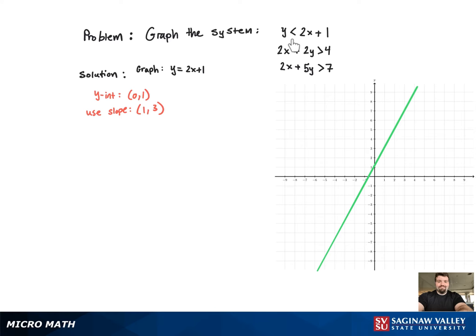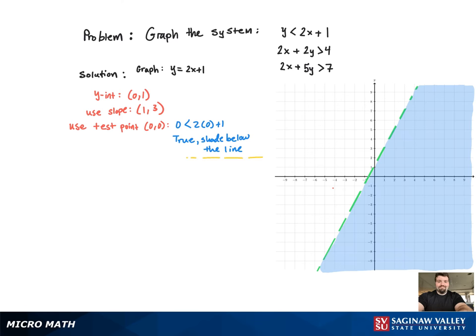Now that we've graphed the line, we need to realize that since the inequality symbol is strictly less than, it's going to be a dashed line. Now we want to shade a region. To do that, we need to use a test point. We use the test point (0,0), and when we plug that in, we realize that we get a true statement. Since it's true, we need to shade below the line because that contains the test point.